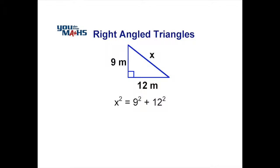We then go through and do the calculation for those sides. We know that 9 squared is equal to 81 and 12 squared is equal to 144. We then add those together to get 225.